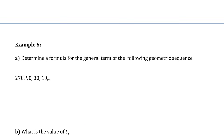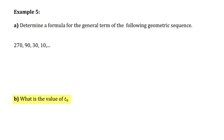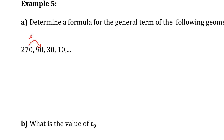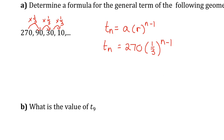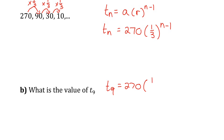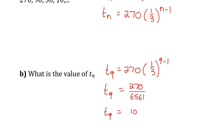Let's do one last example. Here's another geometric sequence. First, let's check for a common ratio: 90 divided by 270 is one third, 30 divided by 90 is one third, and 10 divided by 30 is one third. So the common ratio is one third. Writing the formula for the general term, I replace r with one third and a with 270: Tn equals 270 times (one third) to the power of n minus 1. To find the value of the ninth term, I multiply 270 by one third eight times, which gives 270 over 6561, reducing to 10 over 243.